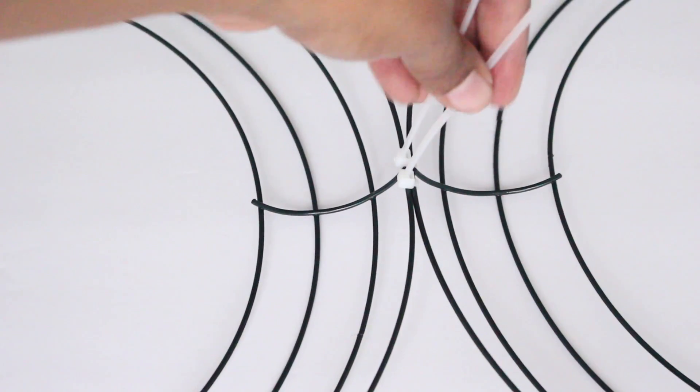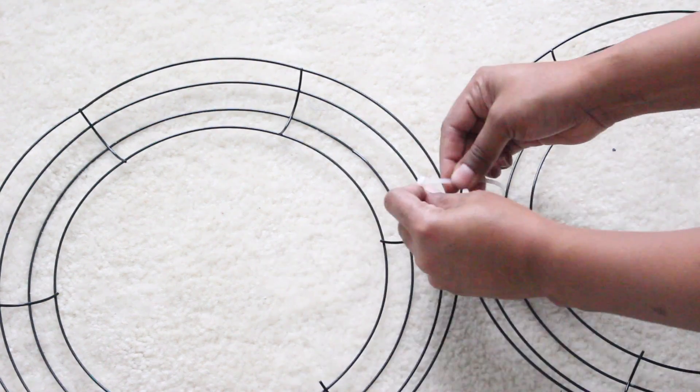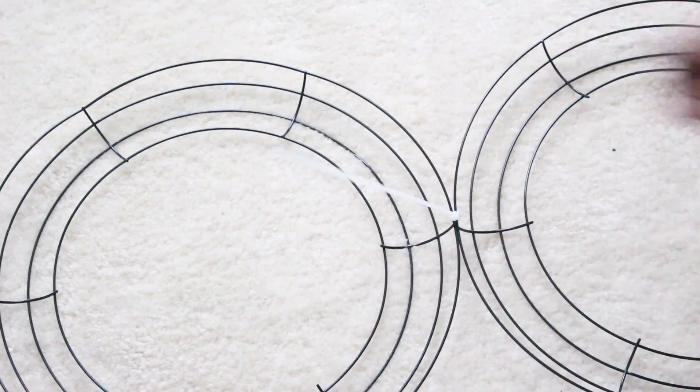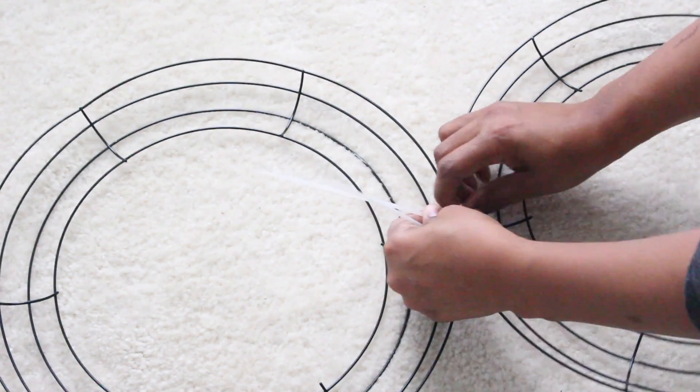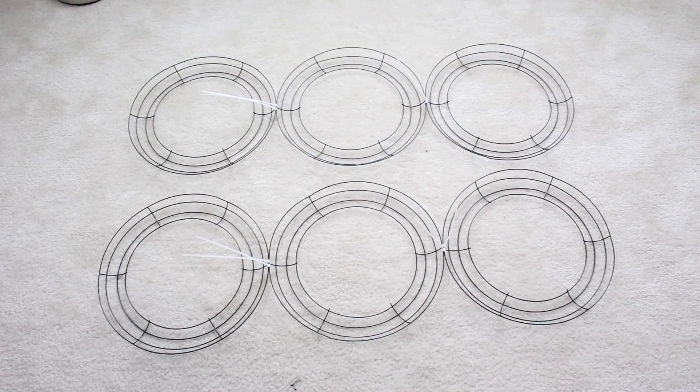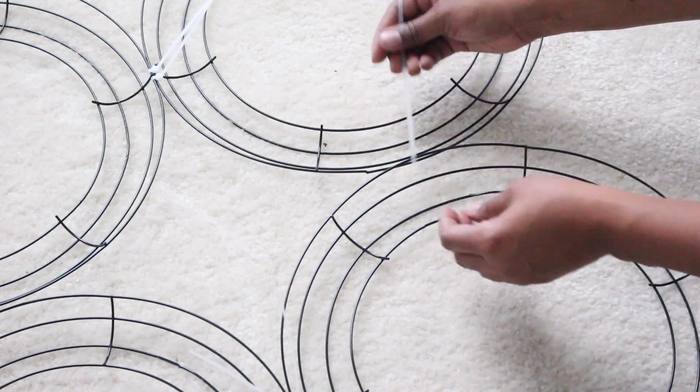I decided to have four rows of three frames. To stabilize the frames better, I use two zip ties to connect them. Right now I'm going to attach the frames horizontally, then connect them vertically with one zip tie.